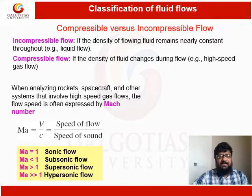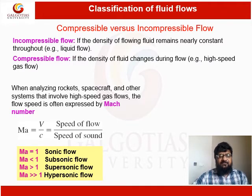The demarcation between compressible and incompressible flow is given by the Mach number, which is the speed of flow over the speed of sound. On the basis of Mach number, we can divide the flow into sonic flow, subsonic flow, supersonic flow, and hypersonic flow.